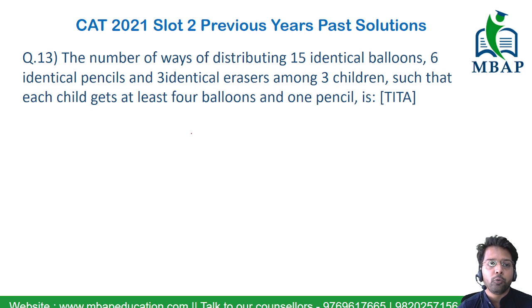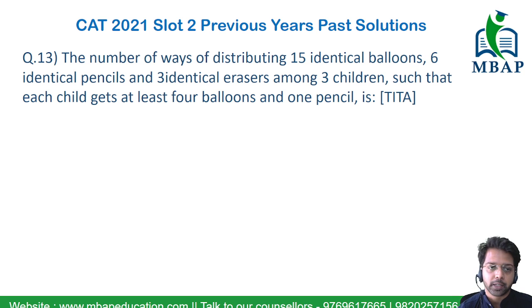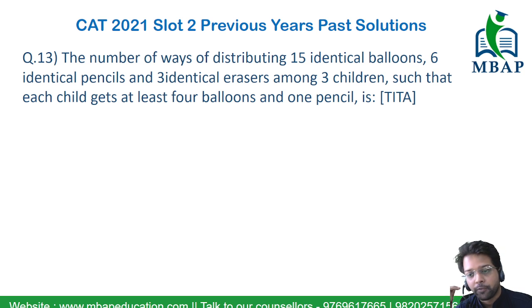Now let's take one of the beautiful questions on the topic of permutation and combination. This is one of the very good questions which came in the year 2021 of the CAT paper. Read the question well.